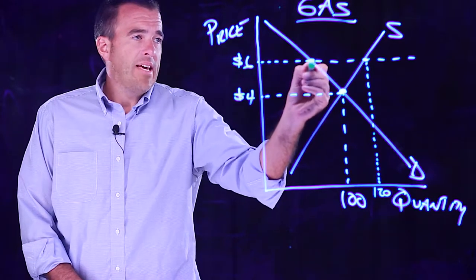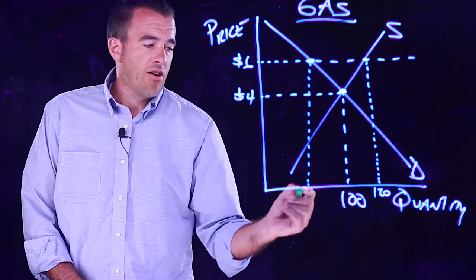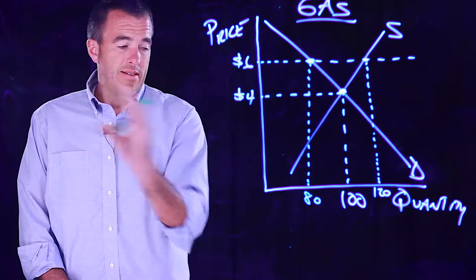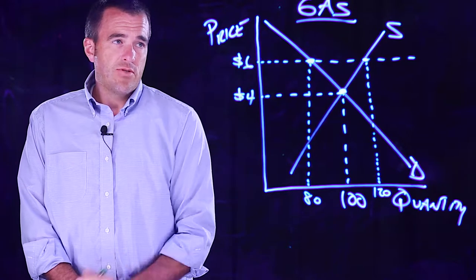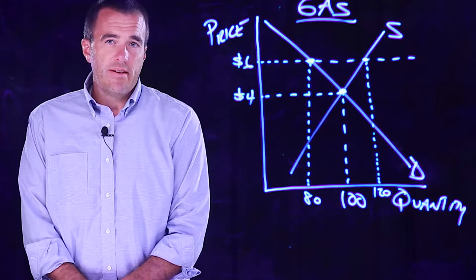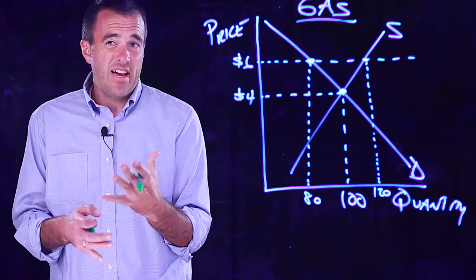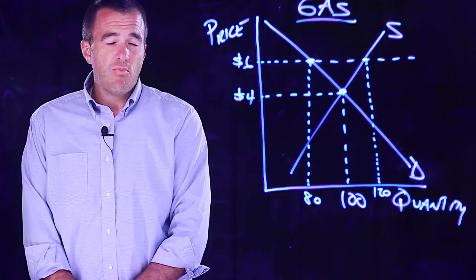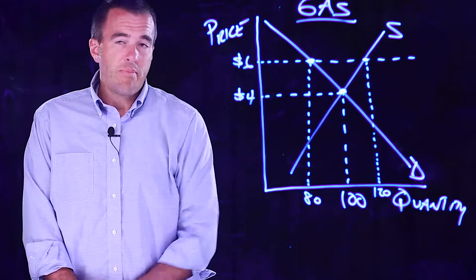Now right here, this is where it hits the demand curve. Let's assume only 80 people want it at $6. However, 120 units are being supplied. So class, what would that be classified as? A surplus or a shortage? When there's more available than people want.